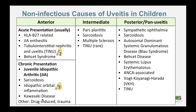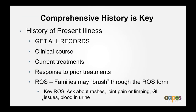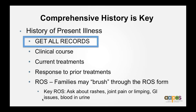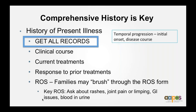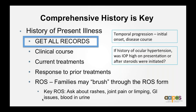Non-infectious causes of uveitis in children are divided into acute and chronic anterior presentations, with JIA being highlighted today. For the diagnostic approach, a comprehensive history is key. You want the history of present illness and most importantly, you want to get all records so you don't recreate the wheel. You'll want to know the clinical course, current treatments, response to prior treatments, and ask about the temporal progression of disease — whether onset was acute or gradual — and the disease course.